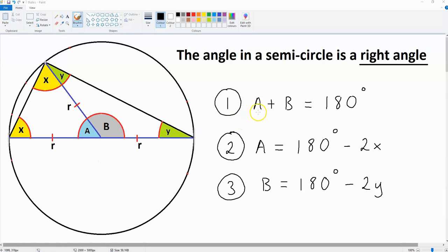We've said that a plus b is 180 degrees. However, what is a and what is b? Well, a is going to be 180 degrees minus 2x. That is because the angles in a triangle add up to 180 degrees. So for a, we have 180 degrees minus 2x because we have two x's within this triangle to the left.